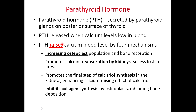Unlike calcitriol, parathyroid hormone does not focus on the digestive tract. Instead, it focuses on increasing osteoclast activity so more bone is dissolved and calcium enters the blood. Parathyroid hormone also promotes calcium reabsorption by the kidneys so less calcium is lost in urine, promotes the production of calcitriol, and inhibits collagen synthesis by osteoblasts — reducing nucleation sites for hydroxyapatite crystallization and thereby inhibiting bone deposition and calcium storage.